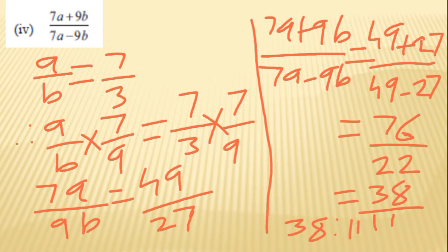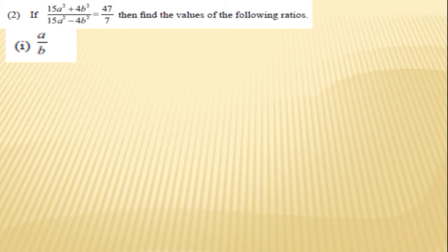Question number 2: If (15a² + 4b²) upon (15a² - 4b²) is equal to 47 upon 7, then find the values of the following ratios. First question is a upon b.